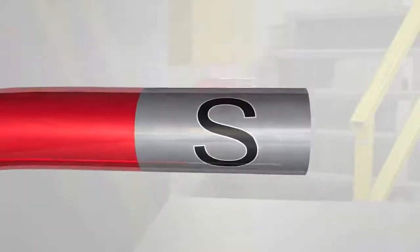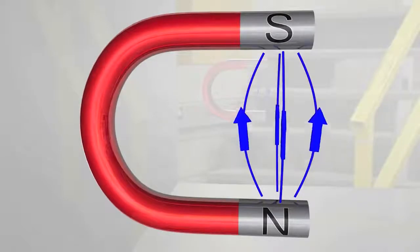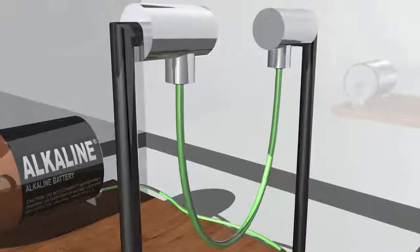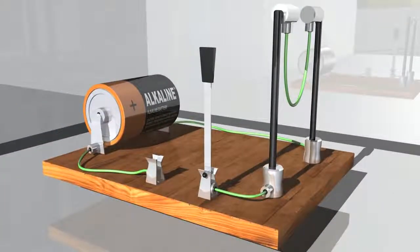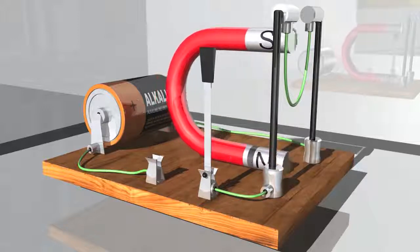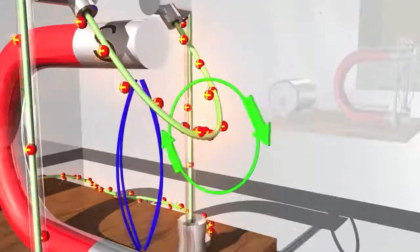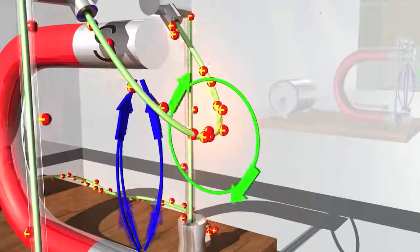The magnetic field always points from north to south, as shown by the blue lines. This wire is arranged in a kind of pendulum so it can swing back and forth. Let's insert the horseshoe magnet into the setup and see what happens when electricity runs through the wire and creates a magnetic field around it.